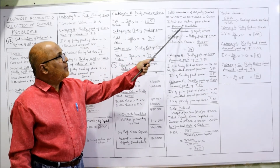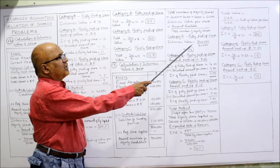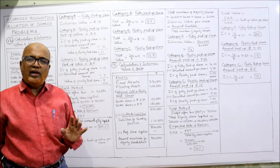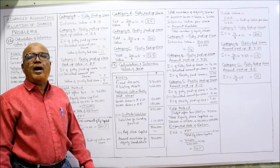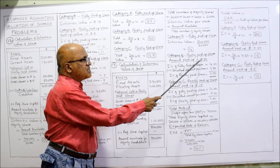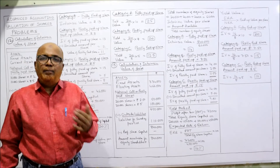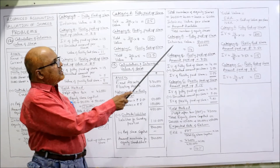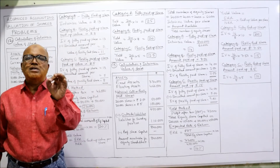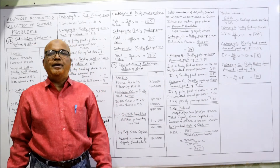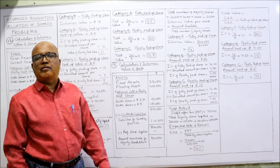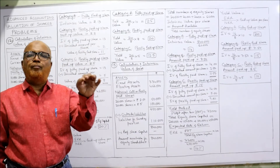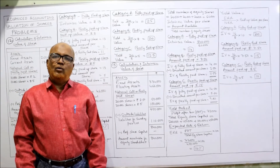Intrinsic value = 8,40,000 divided by 60,000 = 14 rupees — the intrinsic value of the fully called and paid up share. Category B: partly paid up share with 7.5 rupees paid up, unpaid amount is 2.5. Deduct 2.5 from 14: intrinsic value = 11.5 rupees. Category C: partly paid up share with 5 rupees paid up, unpaid is 5 rupees. Deduct 5 from 14: intrinsic value = 9 rupees. Intrinsic value for all three categories is now calculated.